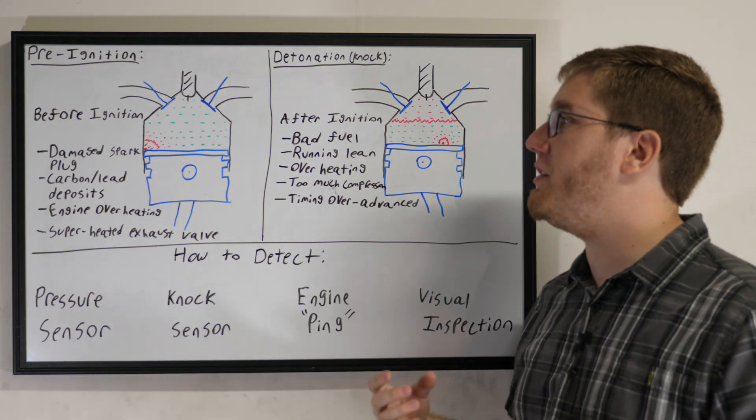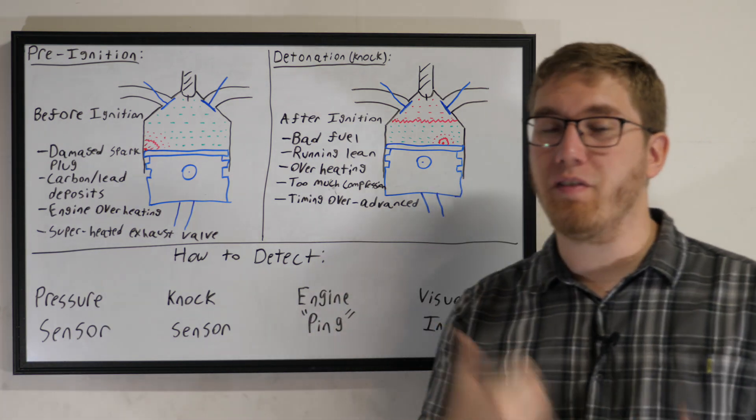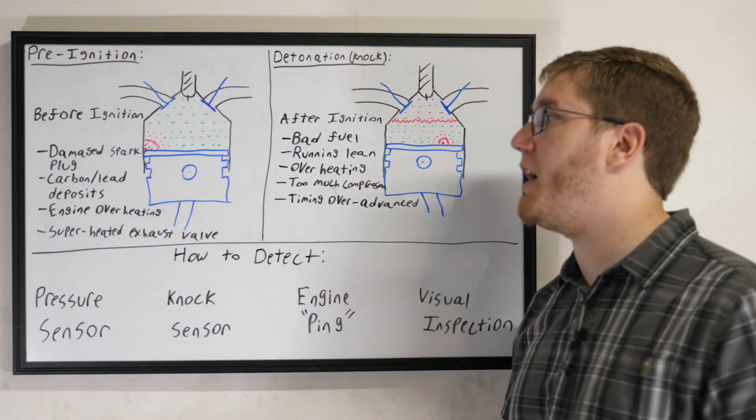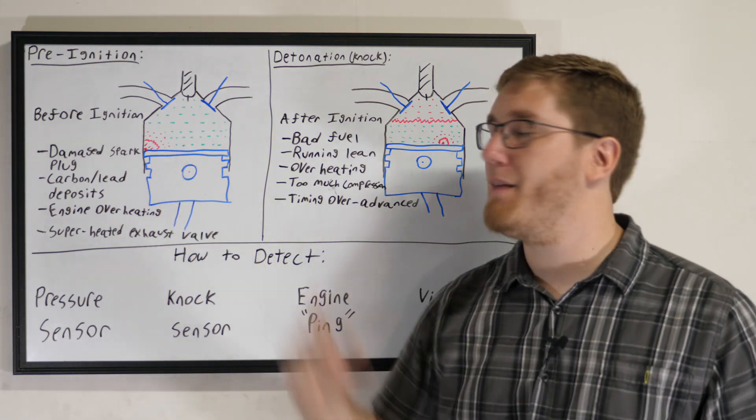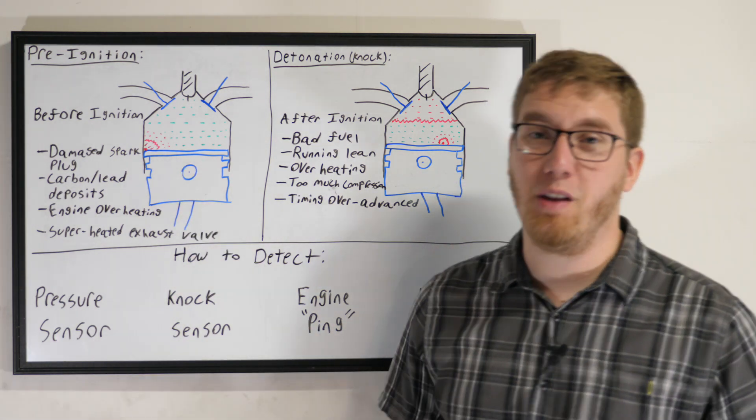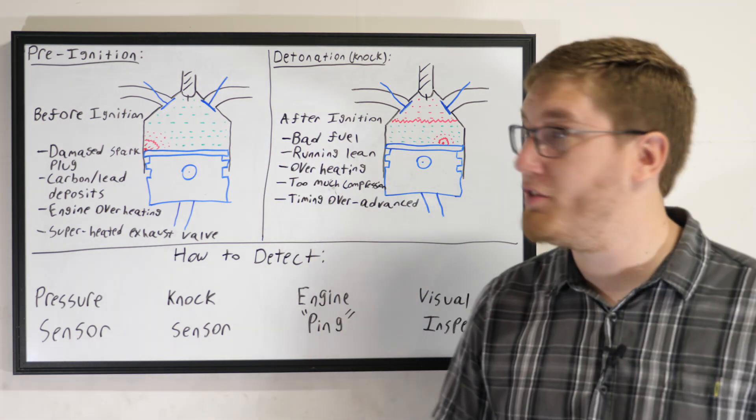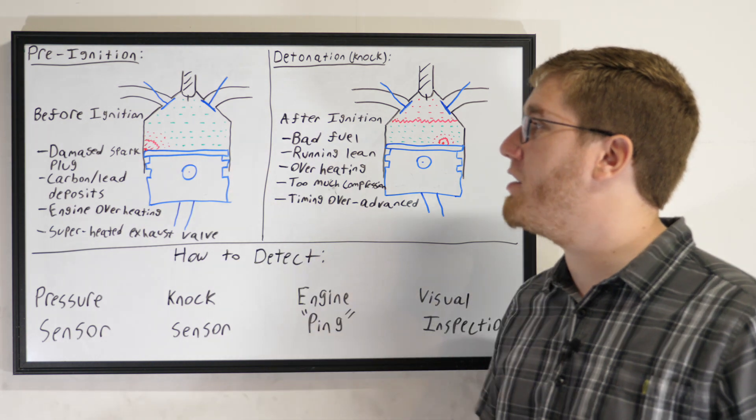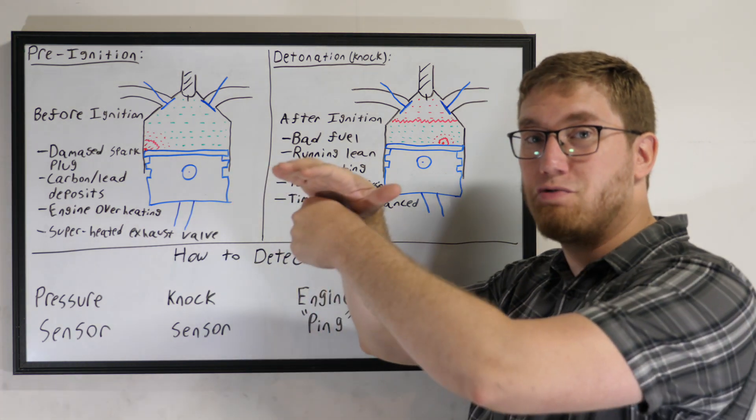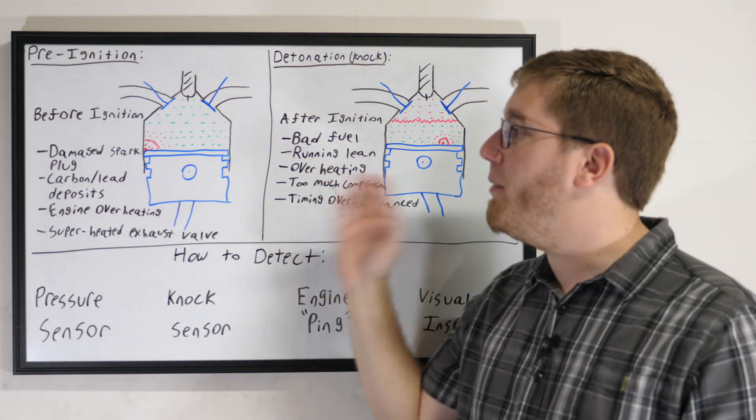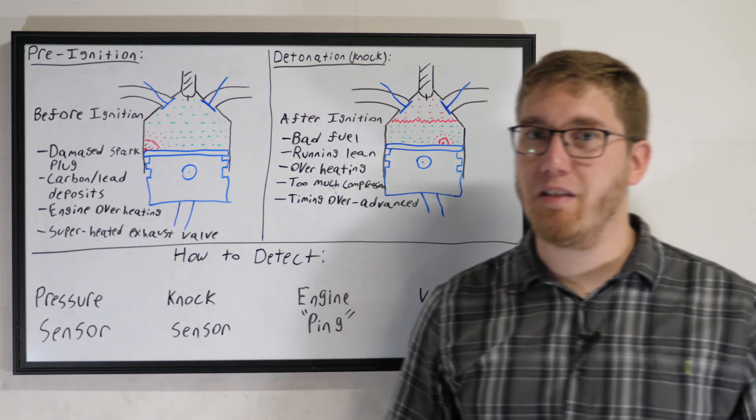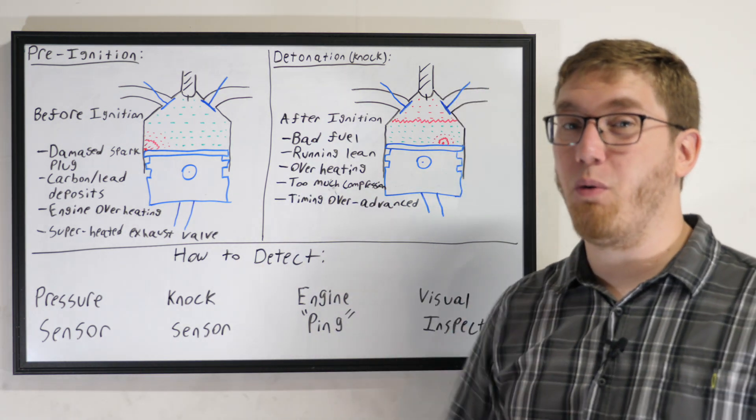So with pre-ignition, this is something that happens before the ignition phase, before the spark plug is fired. This can occur from a damaged spark plug. If your coil pack or your spark plug is malfunctioning, sometimes it can go off at the wrong time before it's supposed to, so you end up igniting some of that air and fuel mixture before the piston has even finished rising up, which is pretty bad.